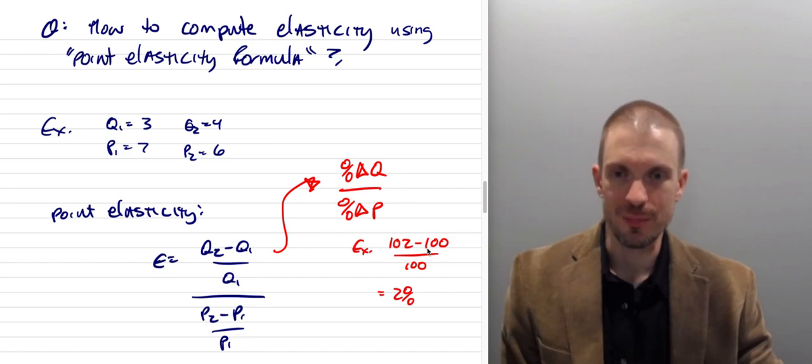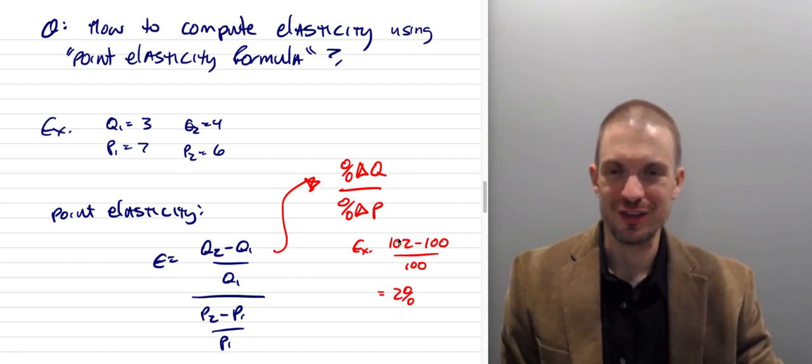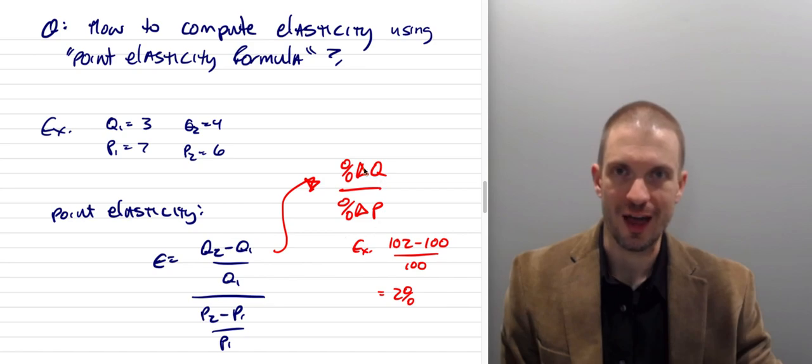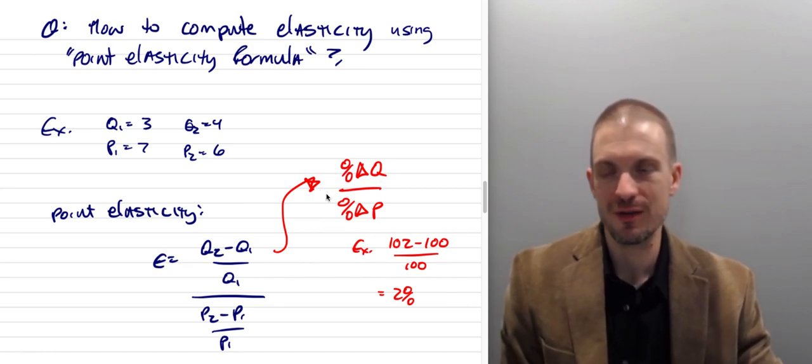So for example, suppose it's 100 degrees out, and it goes up to 102 degrees, that's a 2% change in temperature, right? So 102 minus 100 divided by 100 is a 2% change. All right, so we have a percentage change in quantity in the numerator divided by a percentage change in price in the denominator. And that, sure enough, is exactly, literally, our price elasticity demand formula.